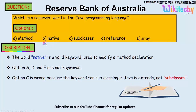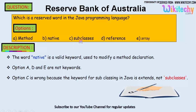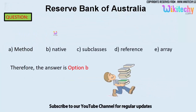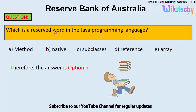The word 'native' is a valid keyword used to modify a method declaration. 'Method' is not a reserved word, and 'reference' and 'array' are not reserved words or keywords either. Option C is wrong because in Java they use 'extends' and not 'subclasses.'